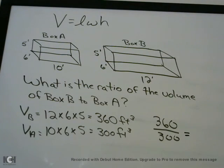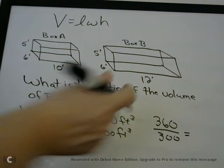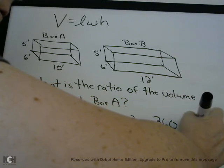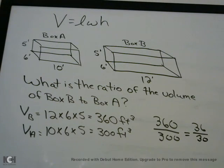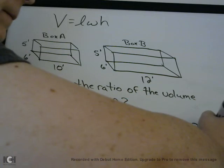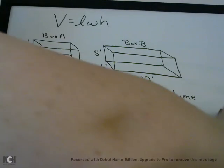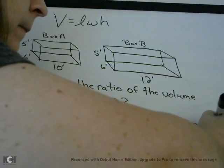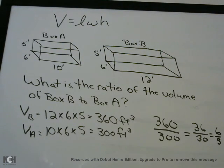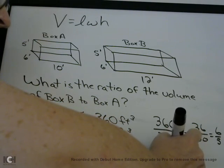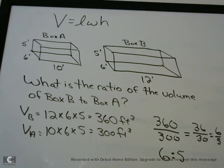To write the ratio, you can use a fraction or a colon. The ratio of box B to box A is 360 over 300. Put this into lowest terms: divide by 10 to get 36 over 30, then divide by 6 to get 6 over 5. So the answer is 6 over 5, or 6 to 5. They like these ratio questions, so don't let that throw you — just calculate the volumes and put them in ratio format.